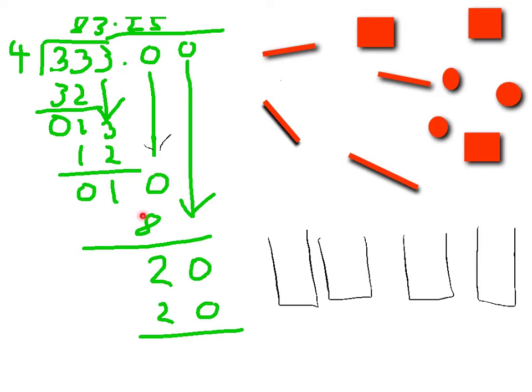And I dragged down this 0. So it's 10. Because it was only 1 and 4 doesn't go into 1. So it's 10, and then the closest one is 8. So I have 2 left and I bring down that 0. So I have 20. And 20 times 5 equals 0.